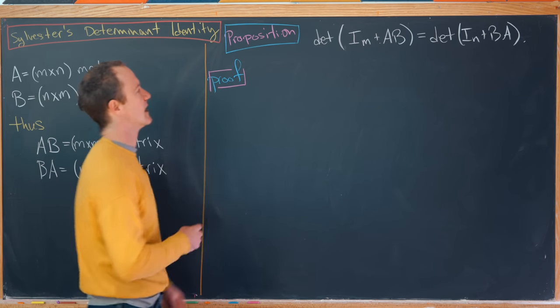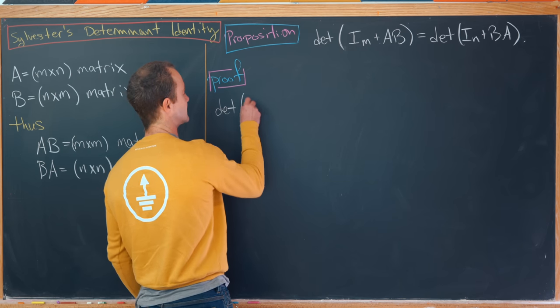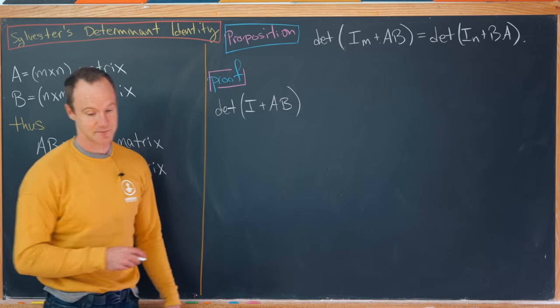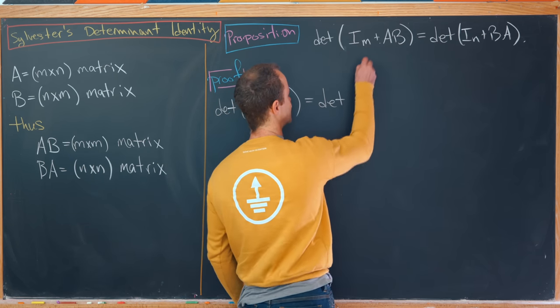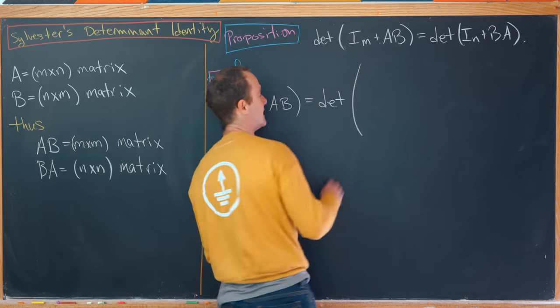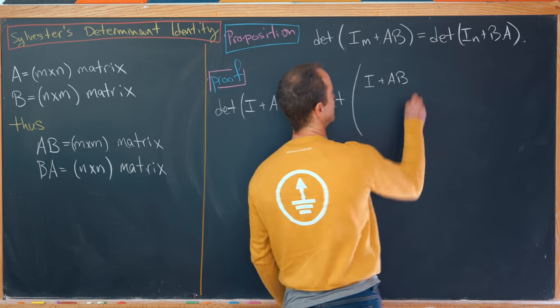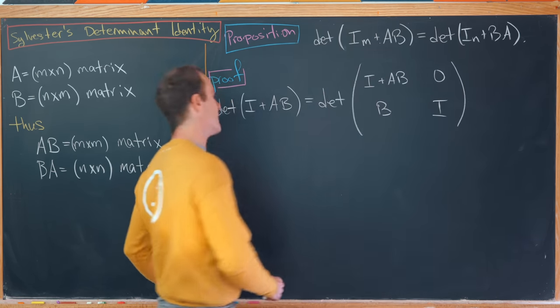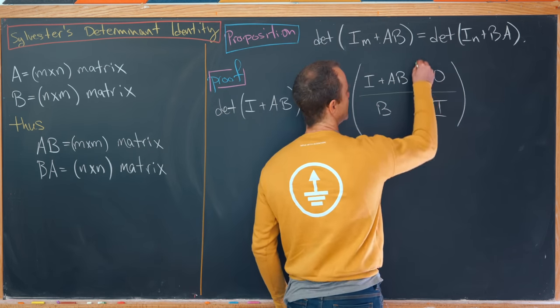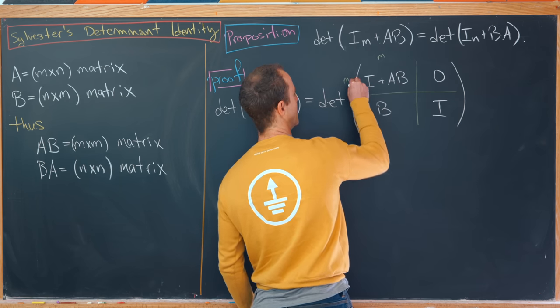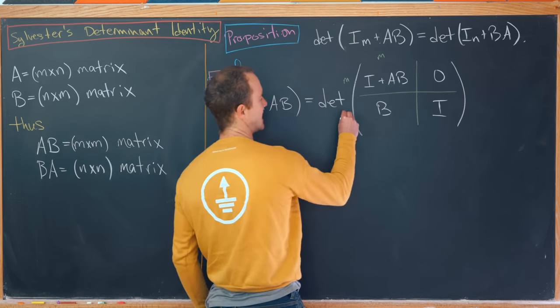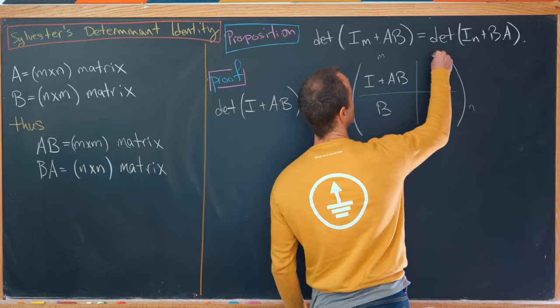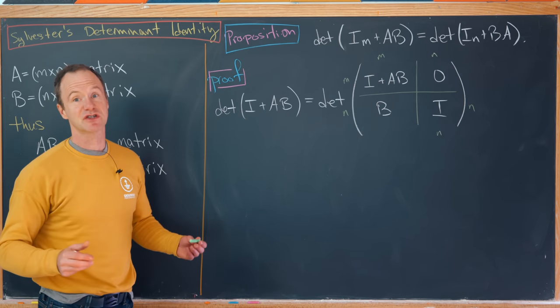Let's start with the left-hand side. We have the determinant of the identity matrix plus A times B. I'll stop writing the subscript of the identity matrix, it'll be clear from context. Notice that this is the same thing as the determinant of the following block matrix: I plus A times B in the upper block, zero here, B here, and then I down here. It might be useful to point out that this block is M by M. This block here is N by M, which means this identity matrix is N by N, which means over here, this is a zero matrix, which is M by N.